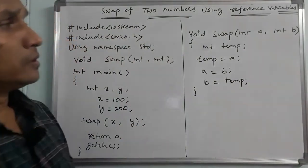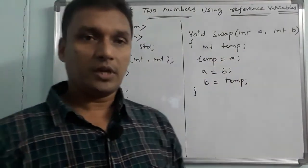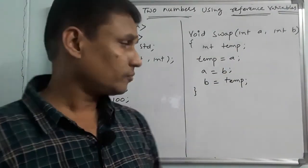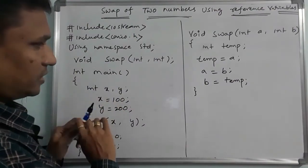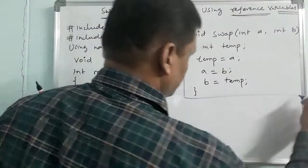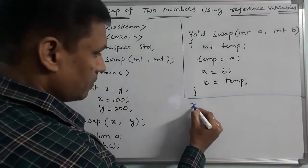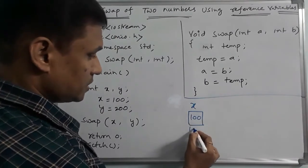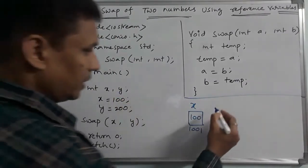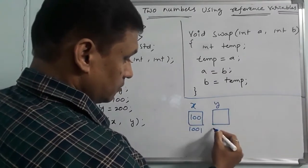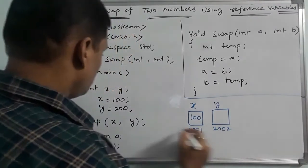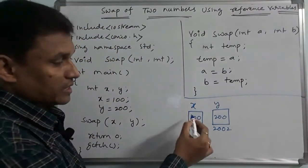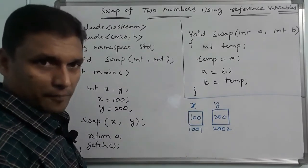Many of us have a doubt here. We have two data members ready. For example, xn is a data member created — its address is 100. And yn is another data member — its address is 200. So xn and yn are two data members.